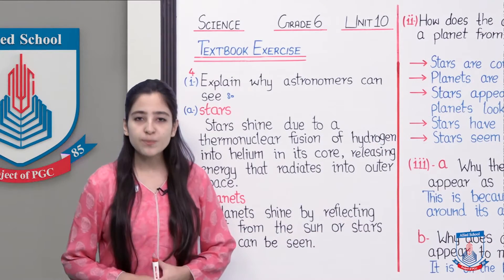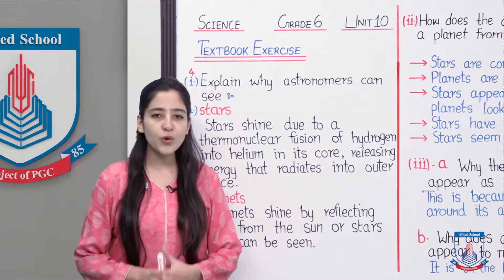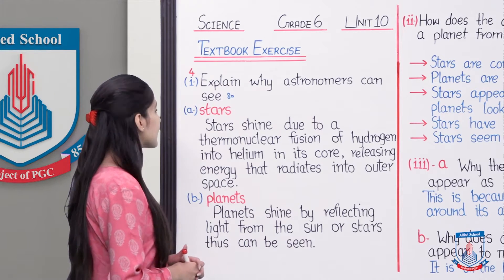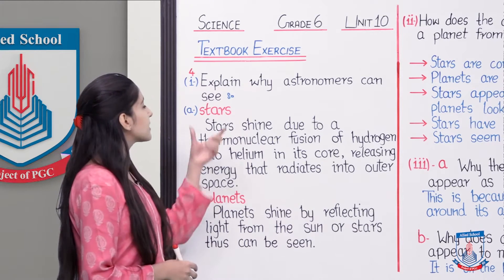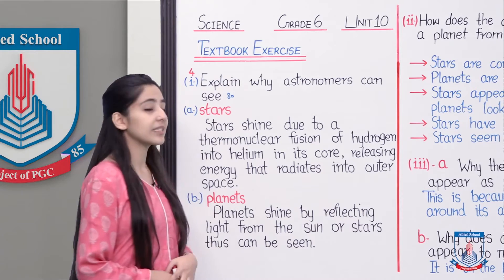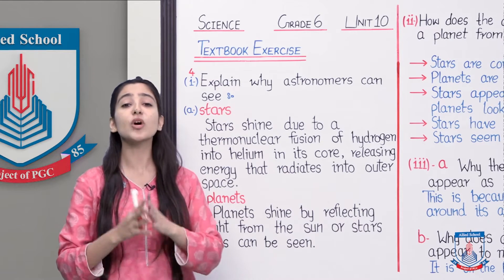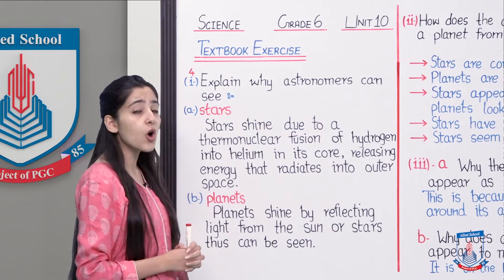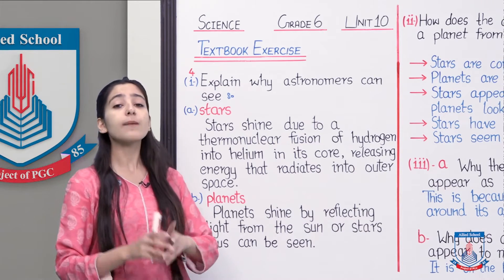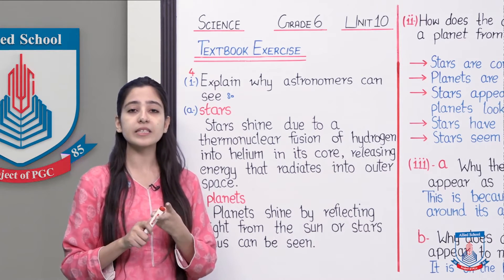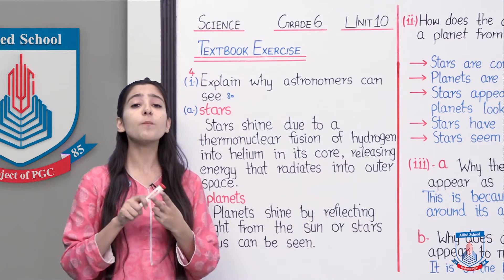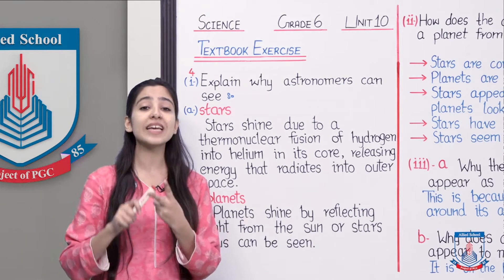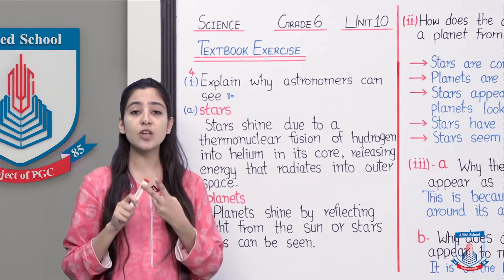Textbook exercise mein question number 4 kya hai? Explain why astronomers can see stars and planets. Humse puchha gaya hai ki jo astronomers hoti hain, woh kis tarhan se dekh sakte hain stars ko aur planets ko. Ab jo stars hain ya phir planets hain, ye do bilkul different cheezein hain — one is a luminous object and the second one is the non-luminous object.